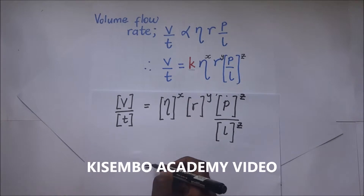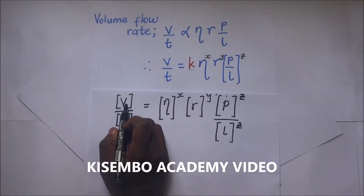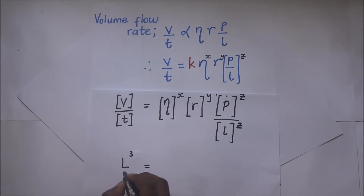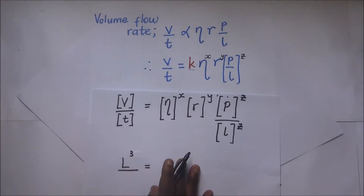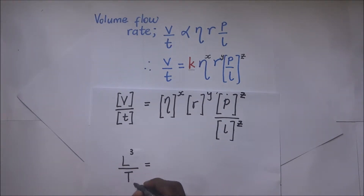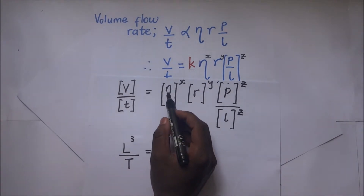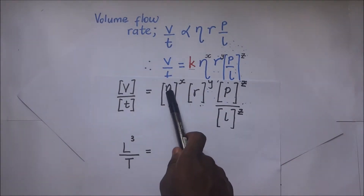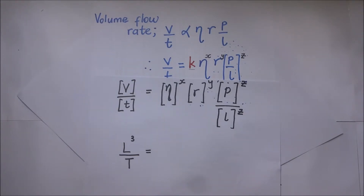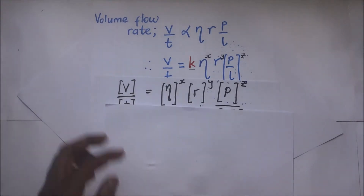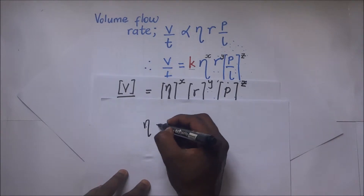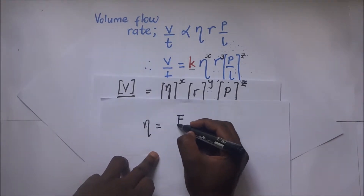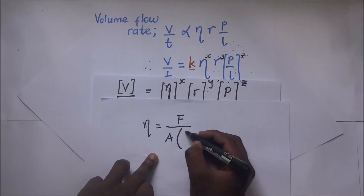Volume is L to the power 3, so this is L³ divided by time T. To find the dimensions of the coefficient of viscosity, we do some side work. The coefficient of viscosity by definition is given by force divided by area times the velocity gradient.